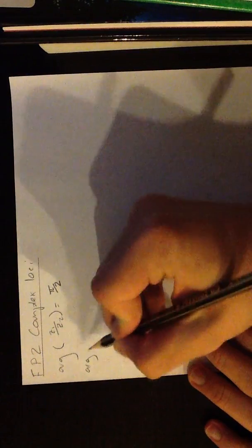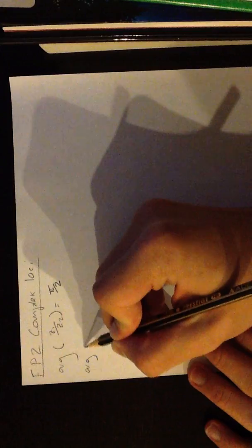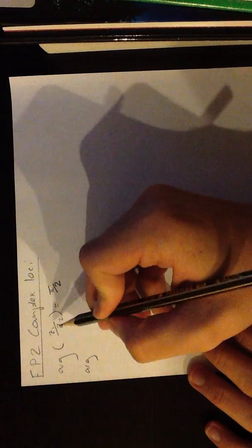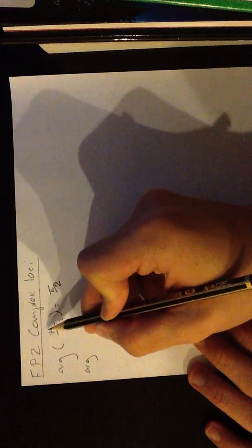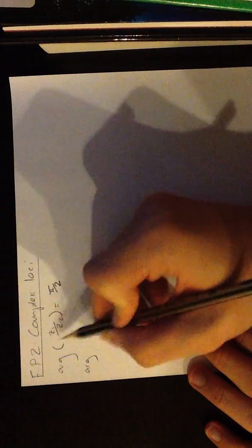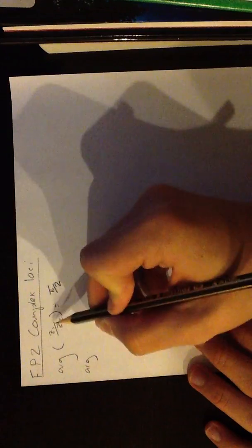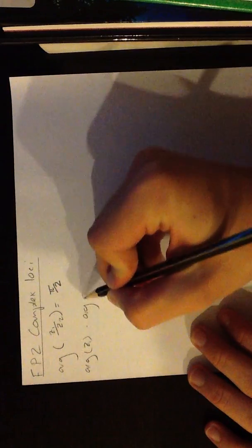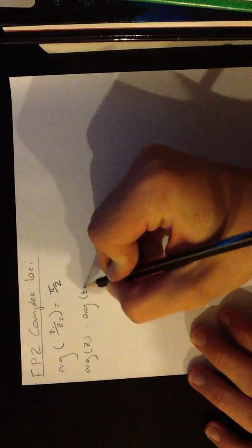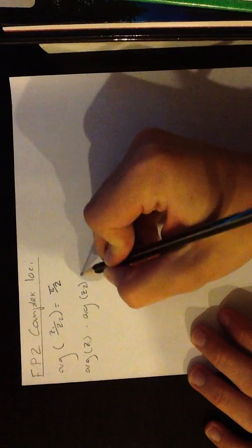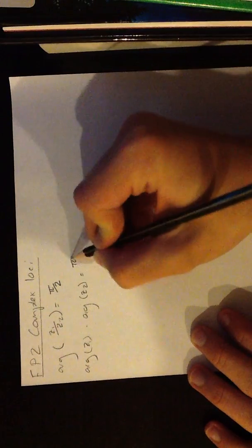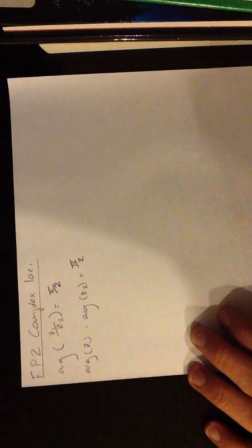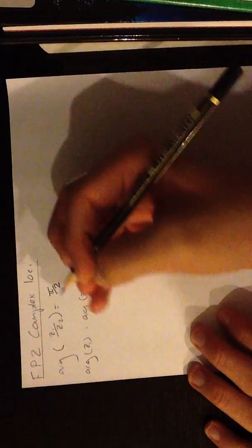First you split the arguments up through the identity: when you have two things divided in an argument, you separate them and they become minus. And that's generally the first step — it's shown everywhere in the FP2 book.